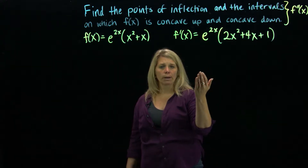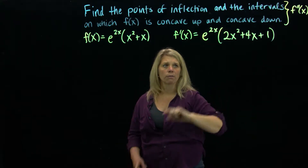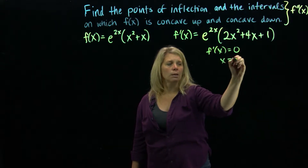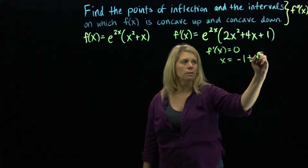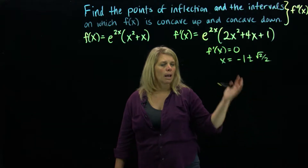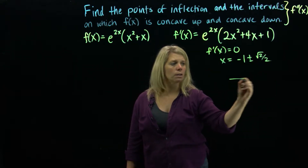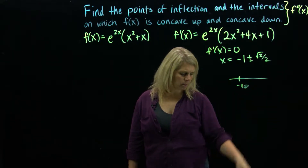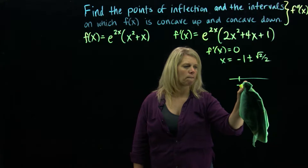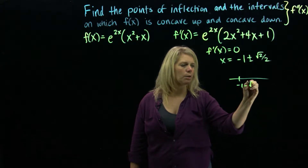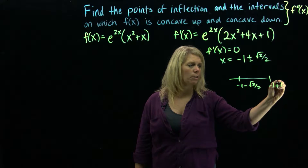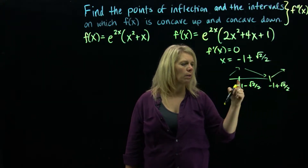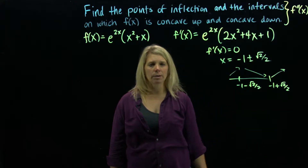From the first derivative, we found critical points by setting the first derivative equal to zero and solving for x. We got x equals negative one plus or minus the square root of two over two. Those are the critical points. We then did a sign chart, putting those critical points on the number line and determining where the function was increasing and decreasing — which told us about local maximum and local minimum locations.